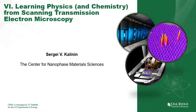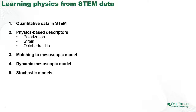Hello, and welcome to the sixth lecture in the series of lectures on applications of big data, machine learning, and artificial intelligence in scanning probe and electron microscopy. My name is Sergei Kalinin, and I work at the Center for Nanophase Material Science at Oak Ridge National Laboratory. In this lecture, we are going to discuss quantitative data in scanning transmission electron microscopy — how do we make an image more than an image. We will discuss physics-based descriptors in STEM: polarization, strain, and octahedral tilts, and then how these parameter maps can be matched to mesoscopic models, dynamic mesoscopic models, and stochastic models.